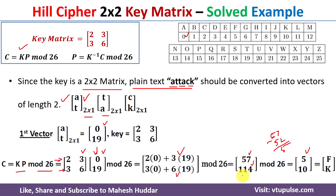Taking mod 26 of 114 gives 10. Now we encode these numeric values back into alphabets using the table: 5 is F and 10 is K. So F is written for 5 and K for 10. This is how we convert the first vector into ciphertext — the pair AT is encrypted to FK.